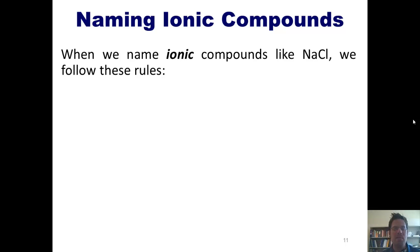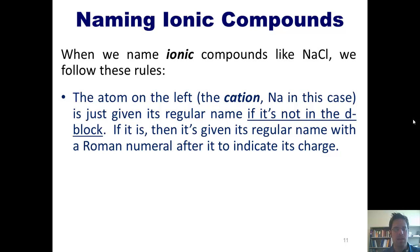When we name ionic compounds like sodium chloride, we follow these rules. The atom on the left, which is the cation, sodium in this case, is just given its regular name if it's not in the d-block. Now, if it is in the d-block, then it's given its regular name with a Roman numeral after it to indicate its charge.